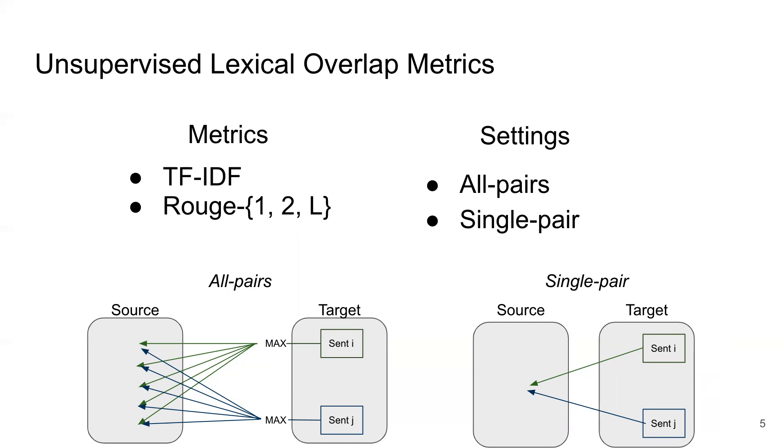Then there's the single pair setting where you just compute the similarity score between the entire source document and the single target sentence at a time, and you use that prediction for each target sentence. This closely resembles the information retrieval setup, where your source document is the document you're trying to retrieve, and the target sentence is your query.